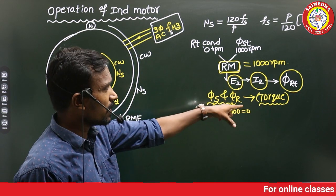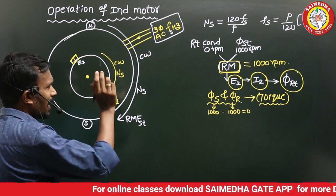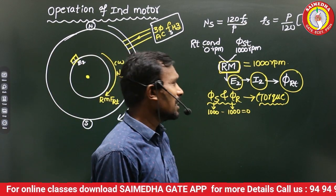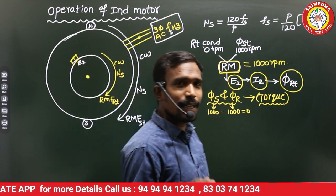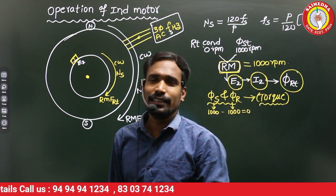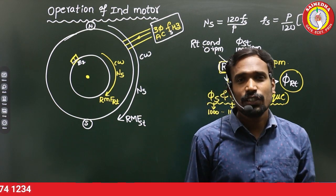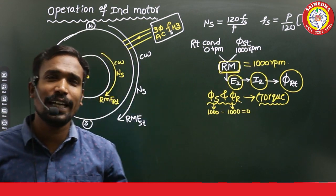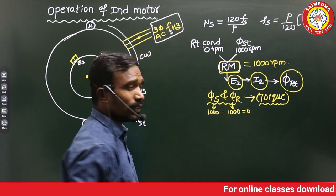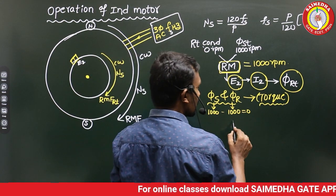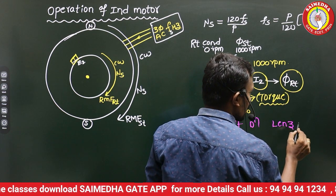Torque is produced in the rotor, so now it's time for the rotation of the rotor. The rotor rotation direction is decided by which law? In a transformer, EMF direction is decided by Lenz's law. In DC and synchronous motors, direction is given by Fleming's left-hand rule. In DC and synchronous generators, EMF direction is given by Fleming's right-hand rule. In an induction motor, the rotor direction is decided by Lenz's law.